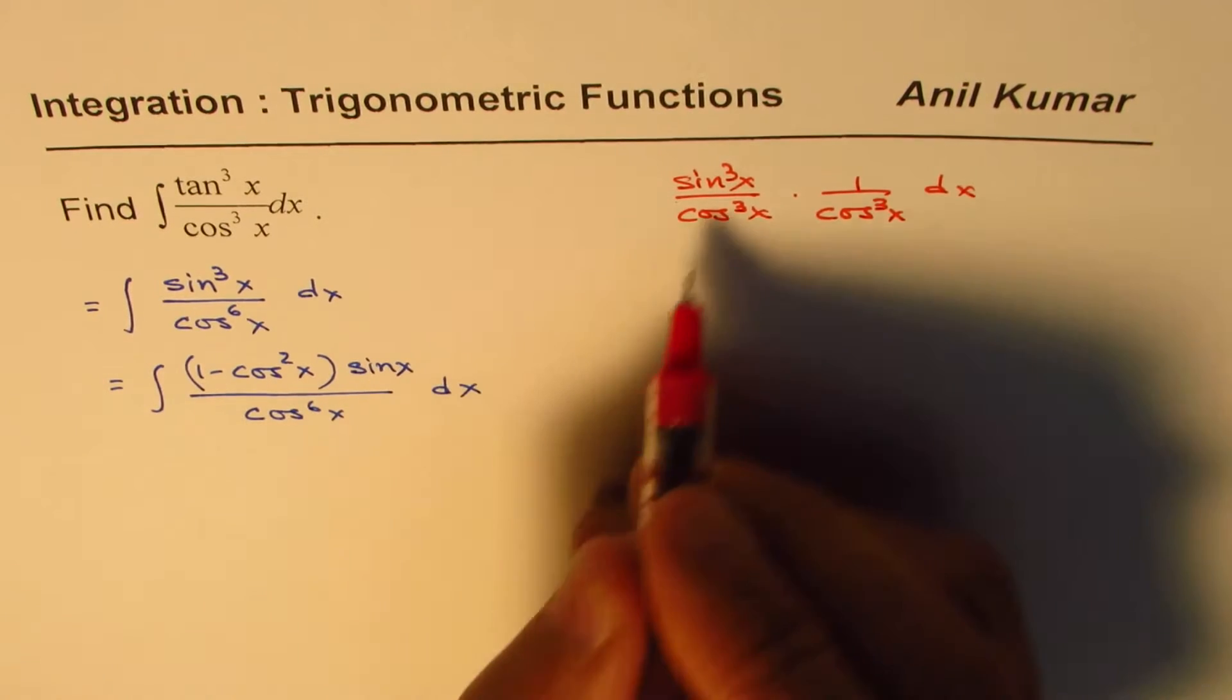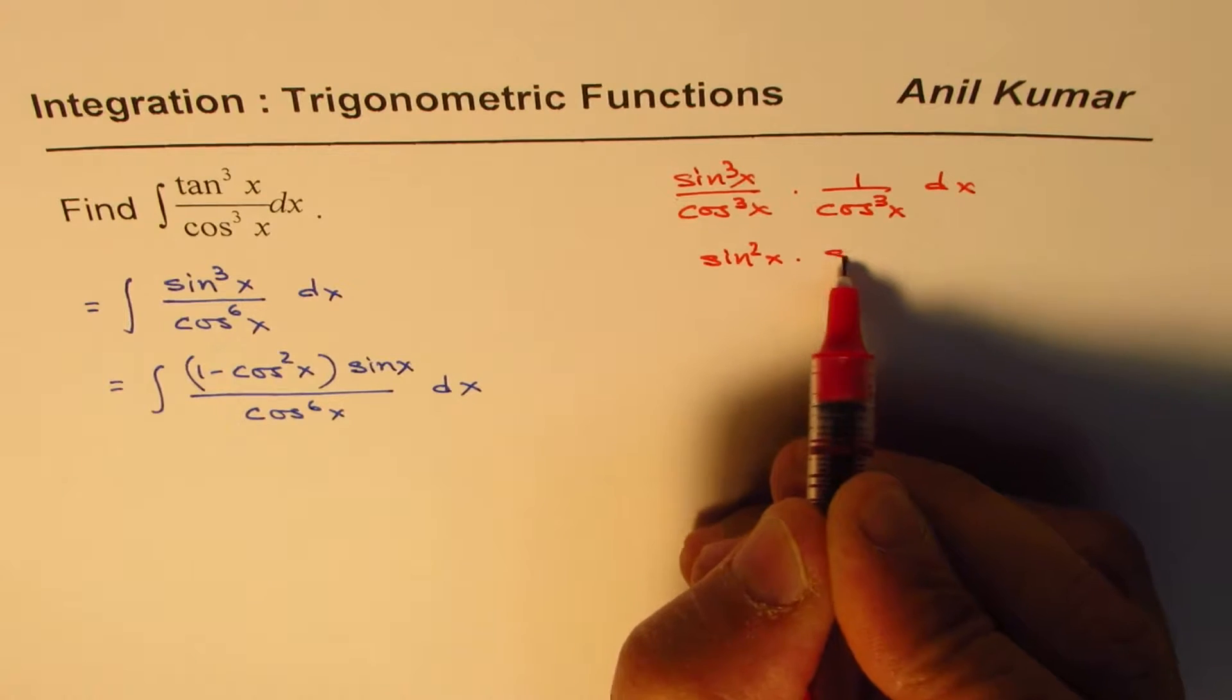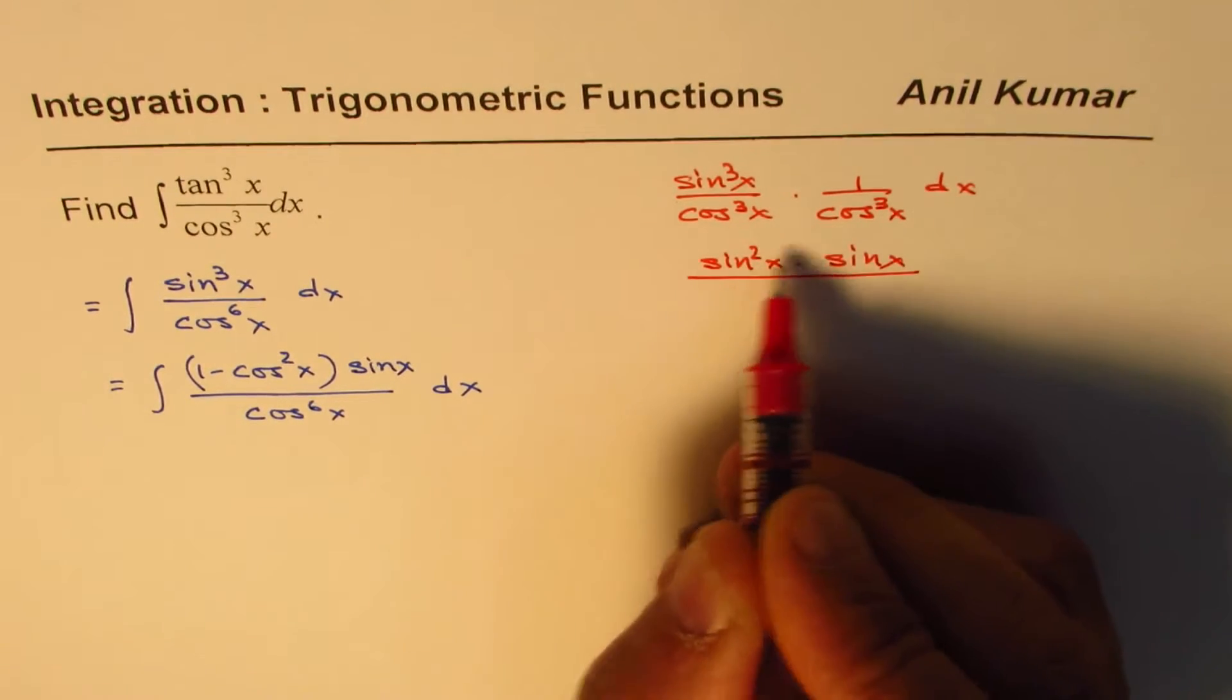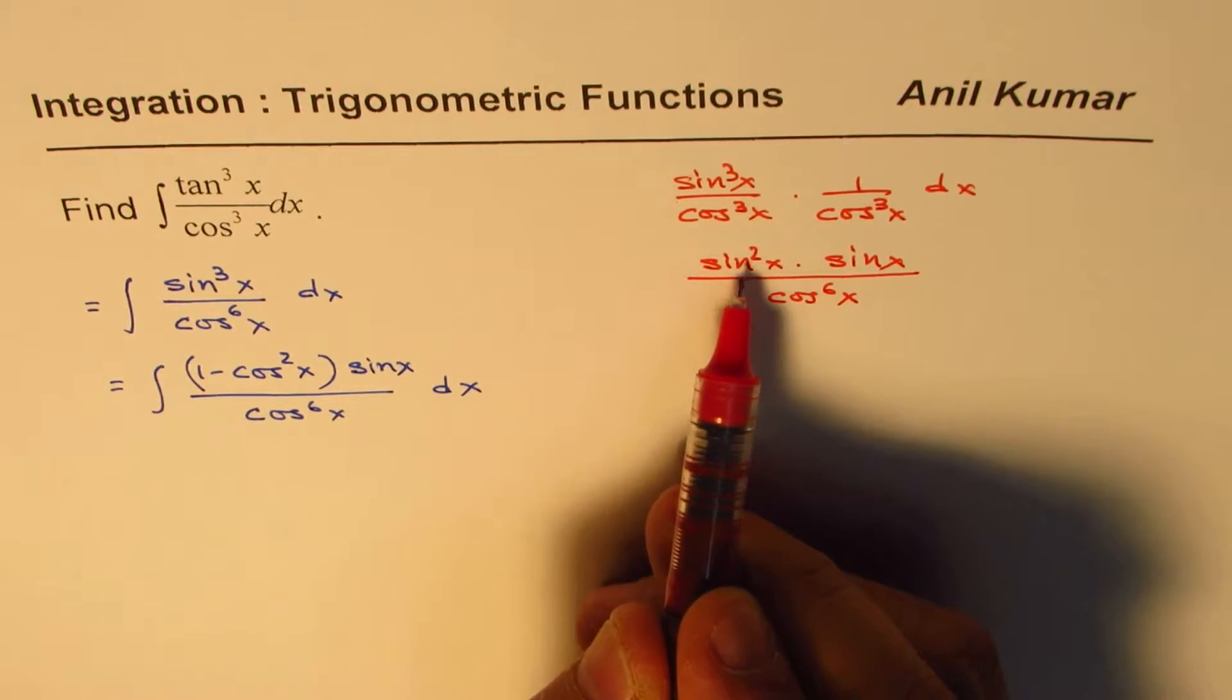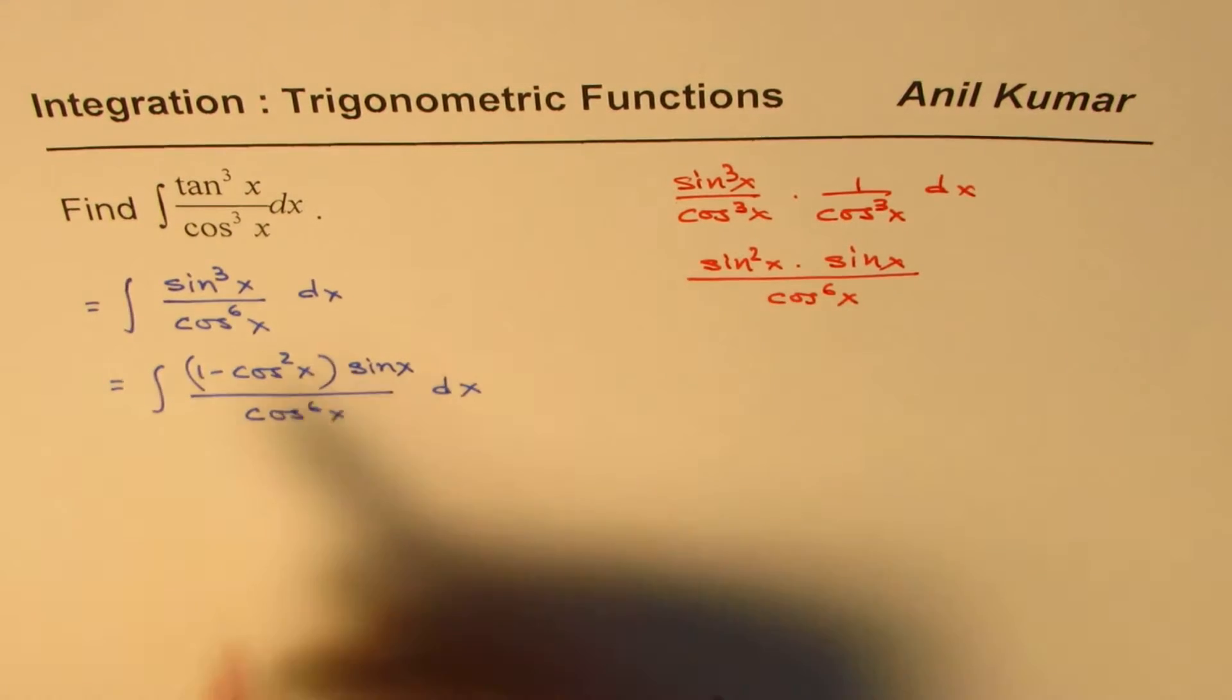In the second step, we wrote sine cube x as sine square x times sine x. Do you see that? And we have cos of 6x. Now this sine square x is being written as 1 minus cos square x sine x.